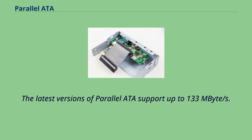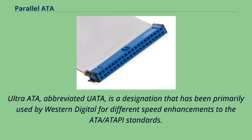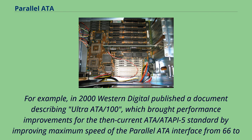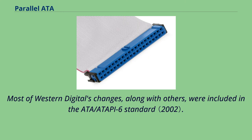Ultra ATA, abbreviated UATA, is a designation that has been primarily used by Western Digital for different speed enhancements to the ATA/ATAPI standards. For example, in 2000 Western Digital published a document describing Ultra ATA/100, which brought performance improvements for the then-current ATA/ATAPI-5 standard by improving the maximum speed of the Parallel ATA interface from 66 to 100 MB per second. Most of Western Digital's changes, along with others, were included in the ATA/ATAPI-6 standard.